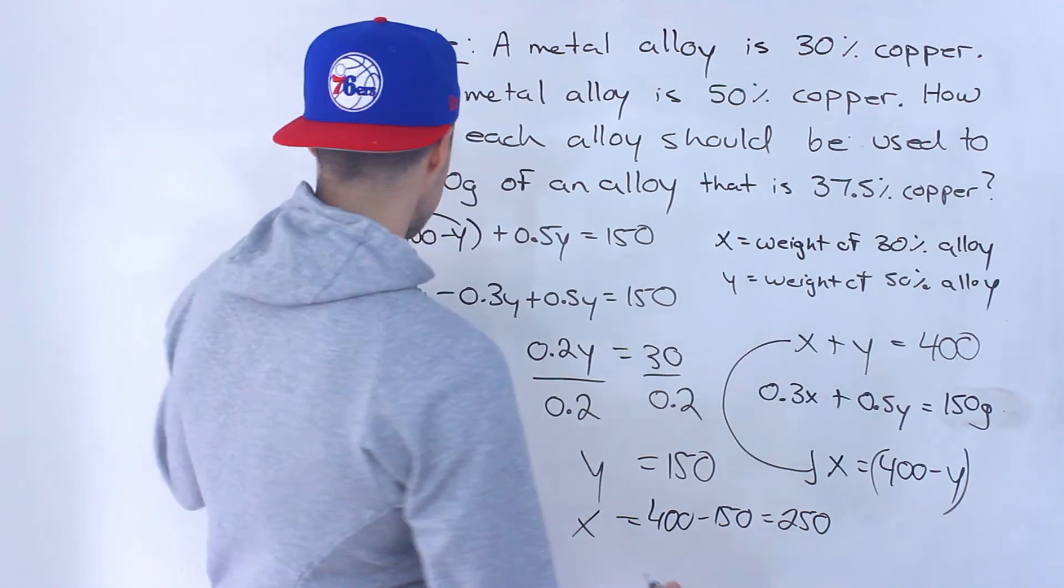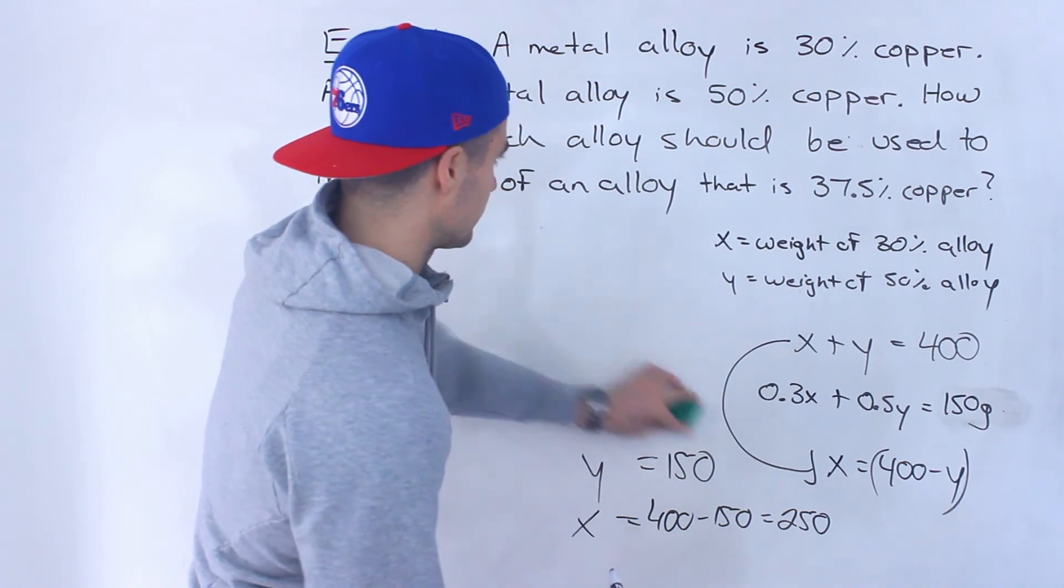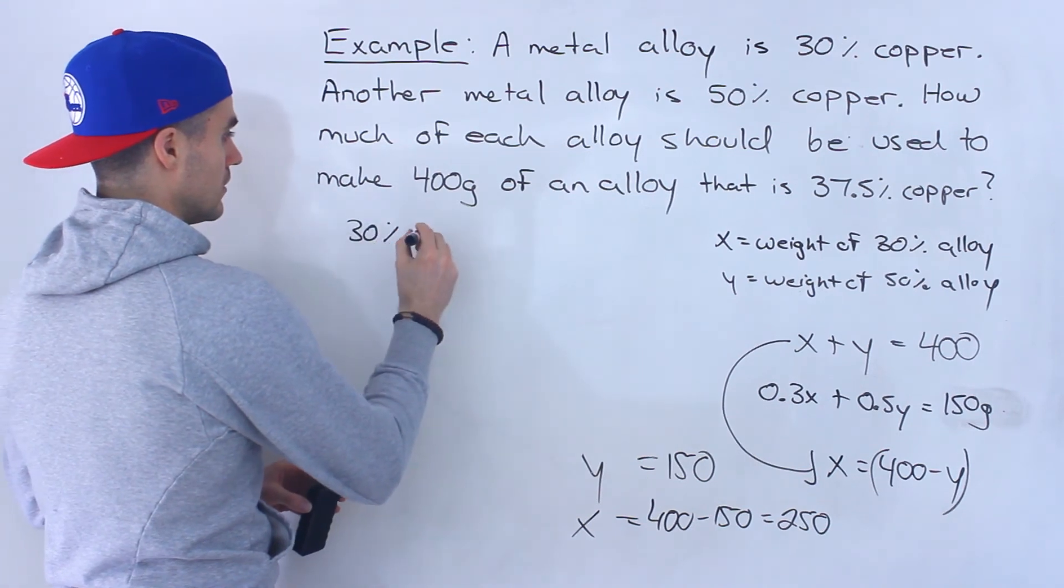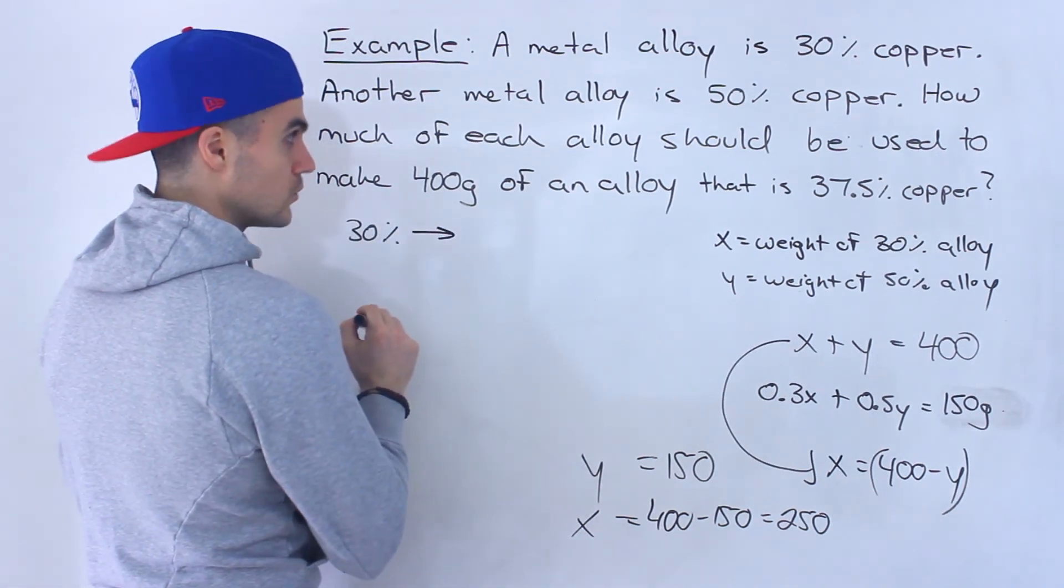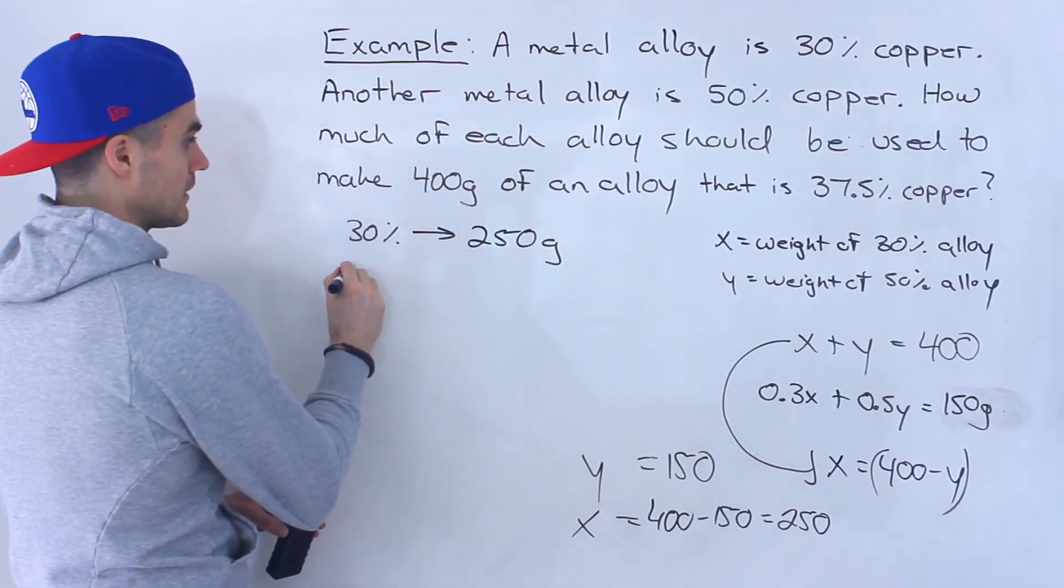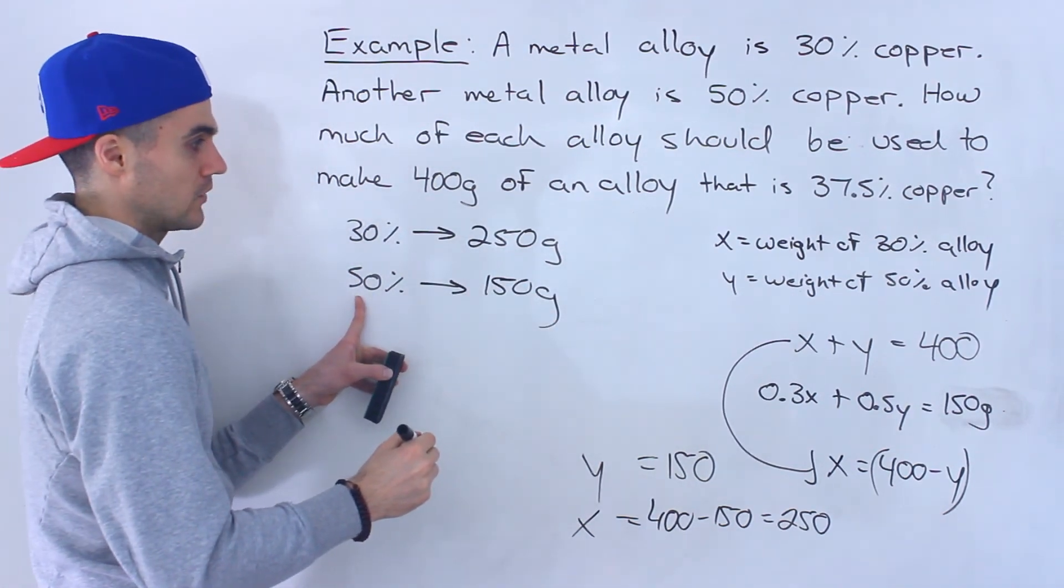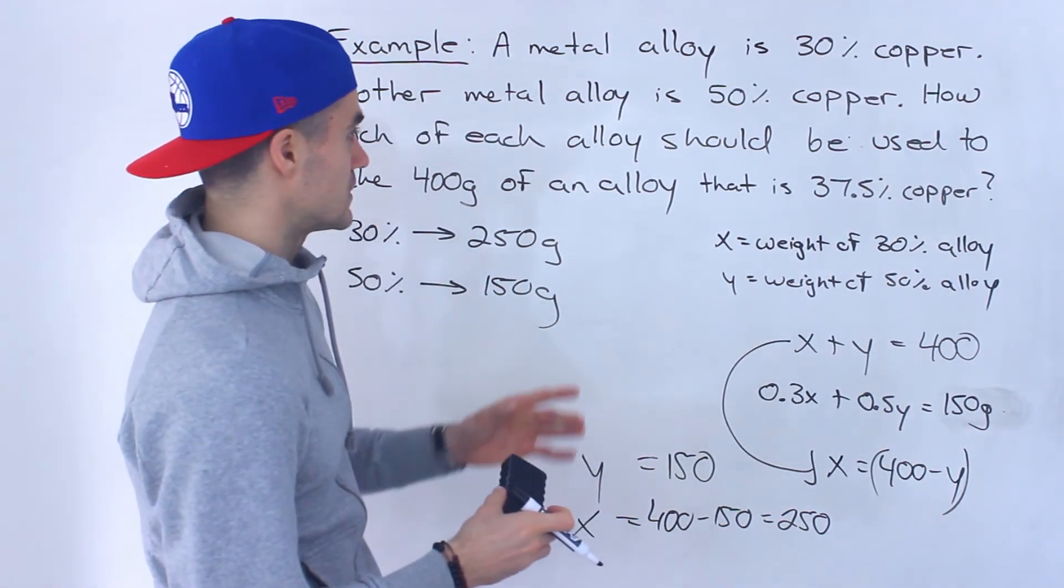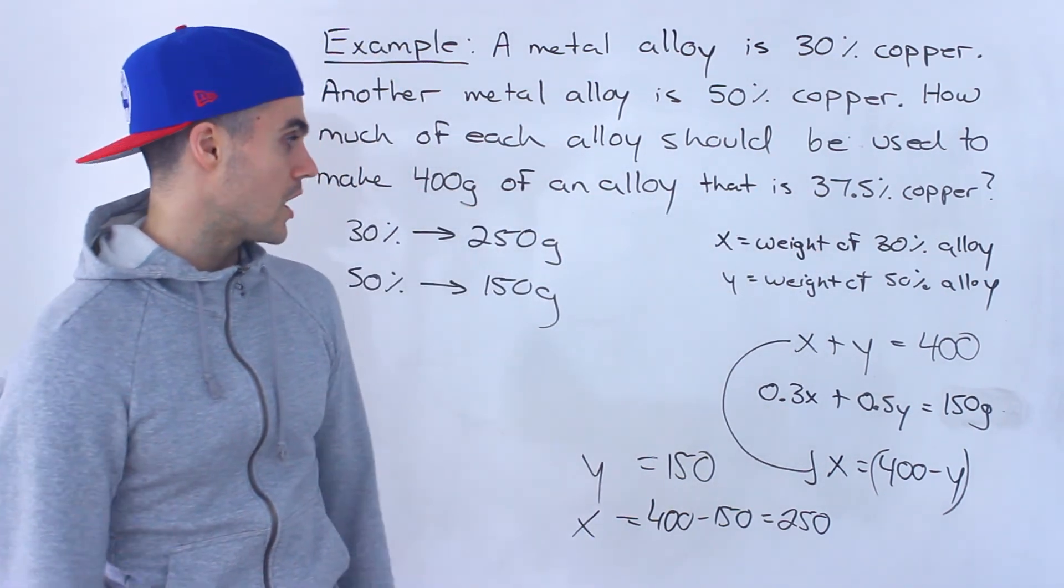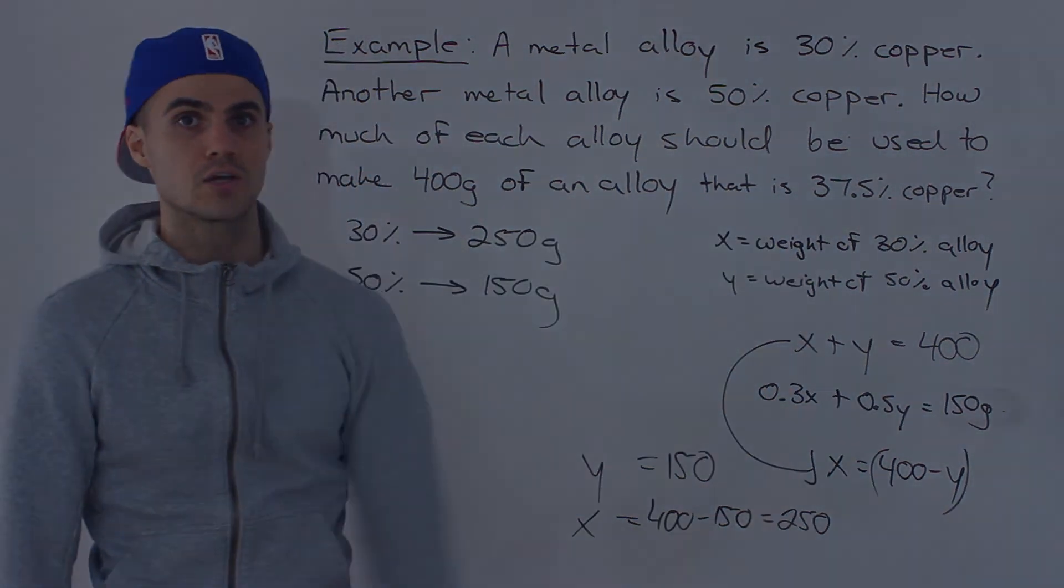So the answer is of the 30% copper alloy, we would take 250 grams of that and then combine it with 150 grams of the 50% copper alloy. And then that would give us 400 grams of an alloy that is 37.5% copper. And then you could check these two answers. You could plug them into the original equations, make sure left side equals right side.